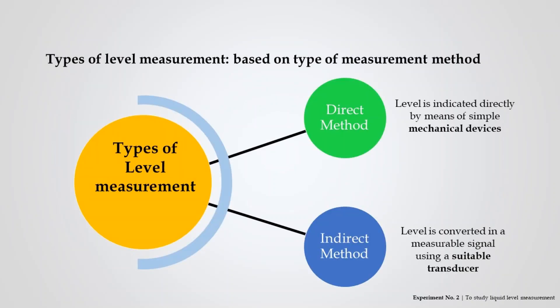In direct liquid level measurement methods, the level is indicated directly by means of simple mechanical devices, whereas in indirect liquid level measurement methods, the level is converted into a measurable signal using a suitable transducer.